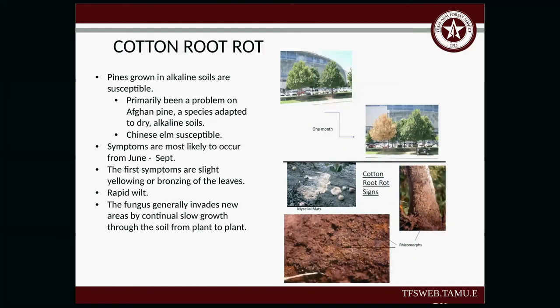Cotton root rot: pines growing in alkaline soils are susceptible, and it's primarily been a problem in Afghan pine — species adapted to dry alkaline soils. Chinese elm is also susceptible. Symptoms occur between June and September. The first symptoms are a slight yellowing or bronzing of the leaves, then a rapid wilt. The fungus generally invades new areas by continual slow growth through the soil from plant to plant, spreading through the soil via rhizomes.